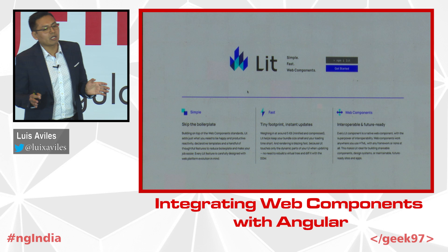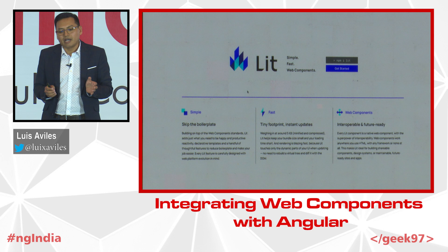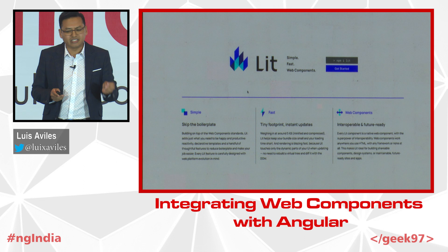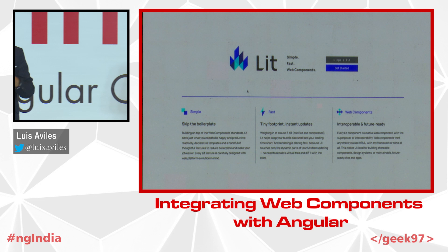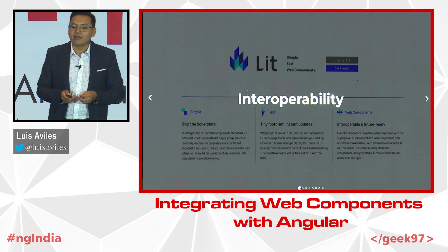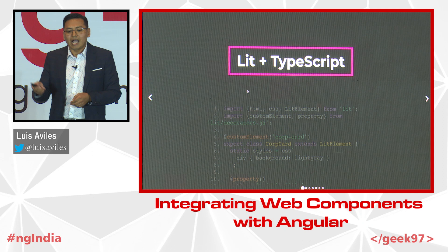Now that we understand what a web component is, it's time to meet LIT. LIT is a powerful open source project that enables you to create custom components. It is a really small library, it is fast, and the good thing is that LIT components are native web components. Using LIT, we are working with the native web platform, and its superpower is interoperability. We may use this option if we are planning to reuse components across different frameworks.